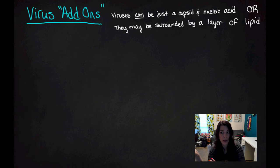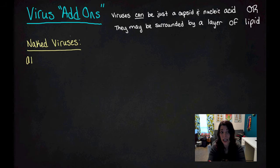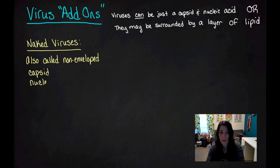For example, everything that we've talked about so far is a naked virus, which is also called a non-enveloped virus. All of those naked viruses have a capsid and a nucleic acid, just like we've been talking about.